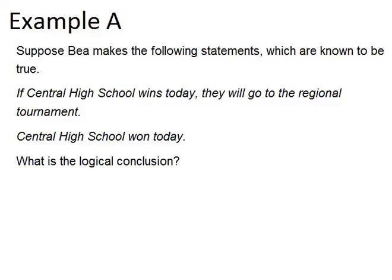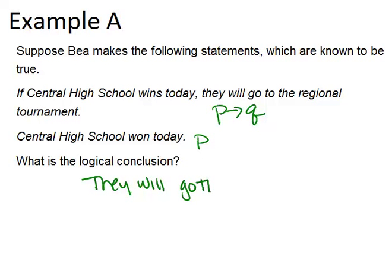This first example says suppose B makes the following statements which are known to be true. If Central High School wins today, they will go to the regional tournament — that's an if P, then Q situation. Central High School won today, so that's P. The logical conclusion is that they will go to the regional tournament.